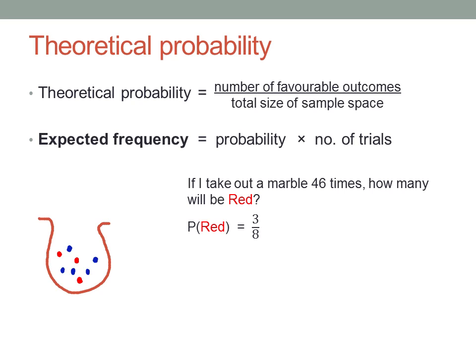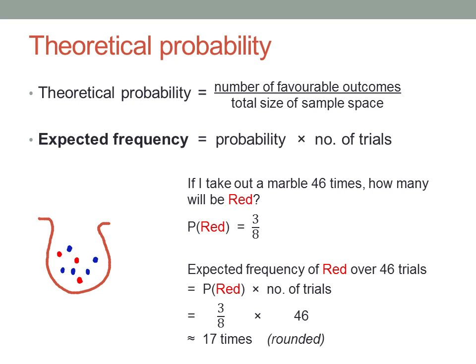Remember, we decided that the theoretical probability of getting a red marble was three out of eight. So the number of red marbles I should expect to get over forty-six trials is just three-eighths of forty-six, which is around seventeen times to the nearest whole number. I would expect to get a red marble out of the bag about seventeen times out of forty-six.